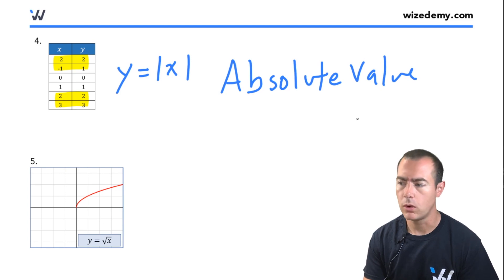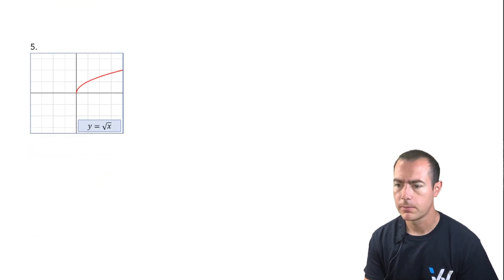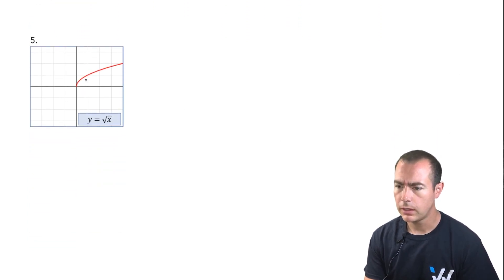And one more. This one looks like it's increasing, but very slowly. We've got an equation in the corner, y equals the square root of x. This tells us we come from the square root family.